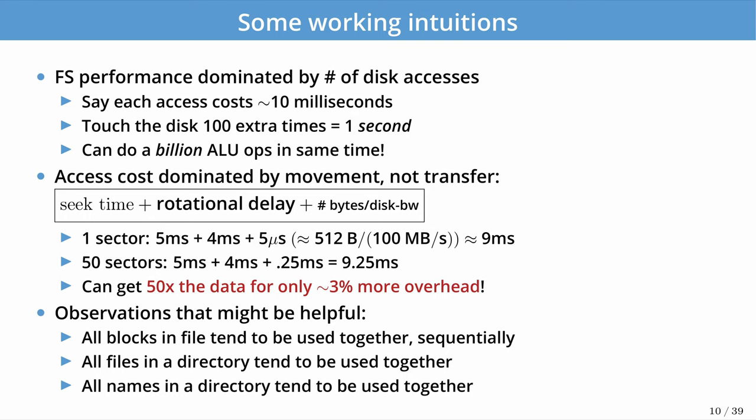There are a few helpful observations. Blocks in a file tend to be used sequentially, reflecting spatial locality — we use blocks near other blocks in a file at roughly the same time. This locality also applies to directories: when you open a directory, you're likely to use multiple files within it, so all files within a directory tend to be used together.